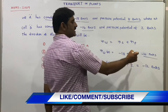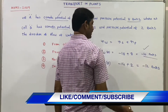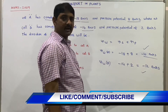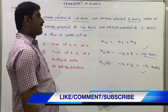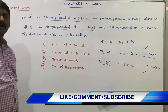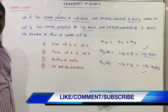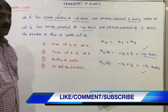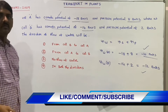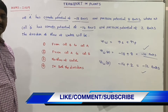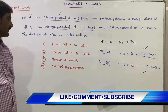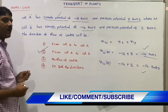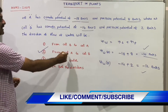Cell A has water potential of -10 bars (higher) and Cell B has -12 bars (lower, more negative). Water always moves from high water potential to low water potential, so water moves from Cell A to Cell B.